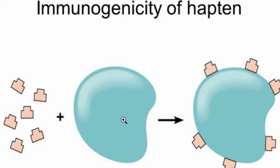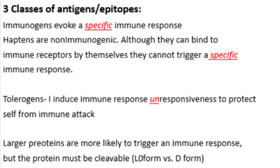Immunogens evoke a specific immune response. If your body is invaded by a particular bacterium, like a coccus-type bacteria, your body will have a different response to that infection versus a different bacterial infection or a viral infection. It will release specific antibodies to handle that response. Even in the innate system, certain molecules may trigger the innate response a bit more than others.